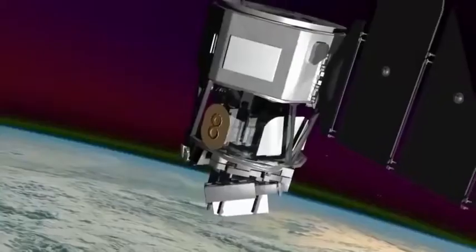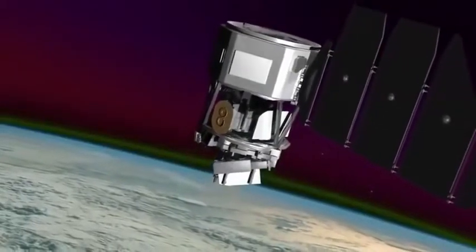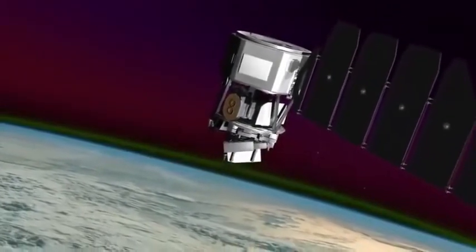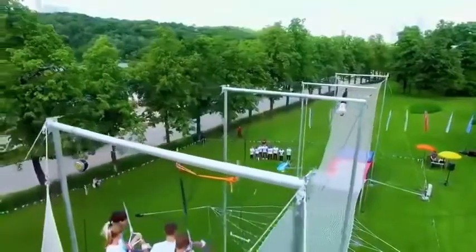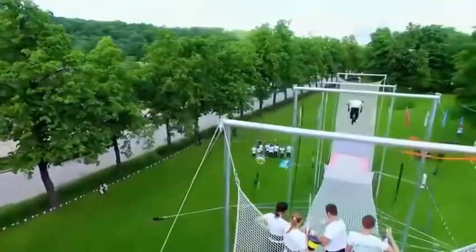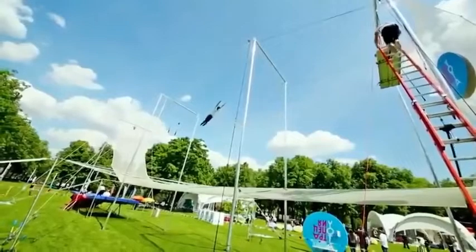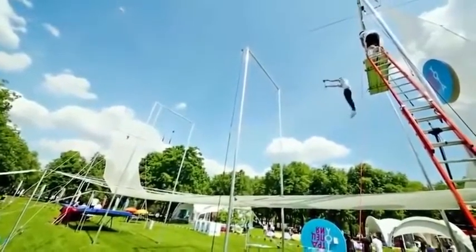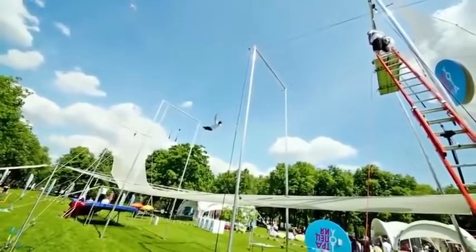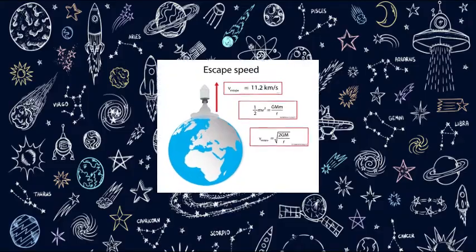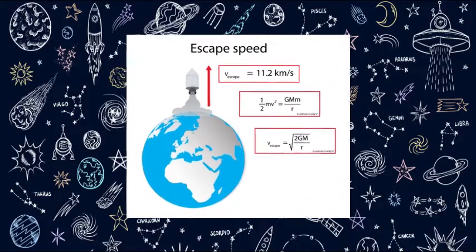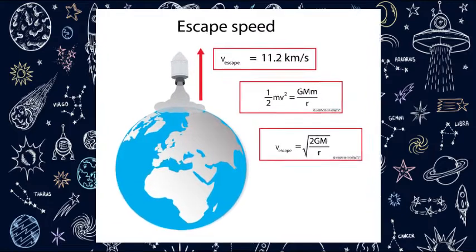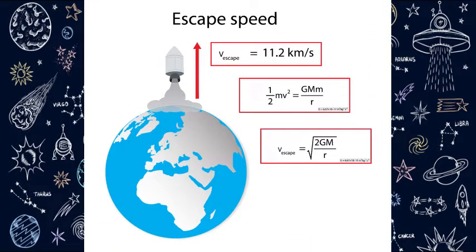If a rock is thrown horizontally, it travels some distance and finally falls on earth. If we throw it hard with velocity named critical velocity, then it will orbit the earth in circular path. If we throw it with higher velocity, it will orbit the earth in elliptical path. If we throw it with higher velocity named escape velocity, then the rock will escape from earth's gravity and it will travel in space to never come back on earth again.